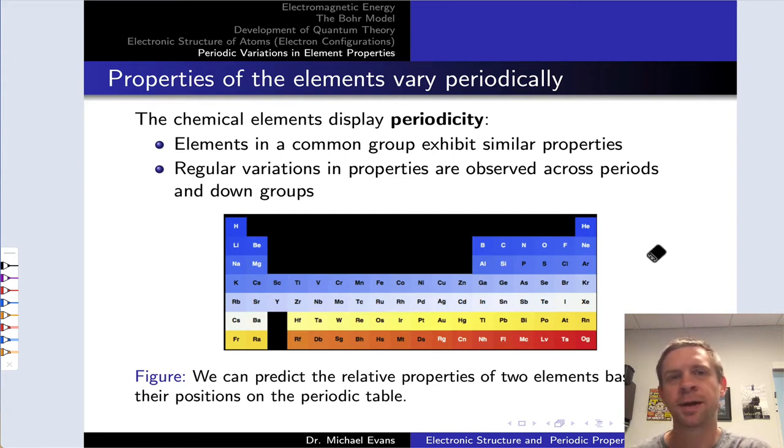In the last section of this unit, we're going to talk about periodicity, which are regular variations in the properties of the elements that are modeled on the periodic table. The structure of the periodic table really reveals periodic trends to us. And the first thing to note is that the chemical elements do display periodicity.